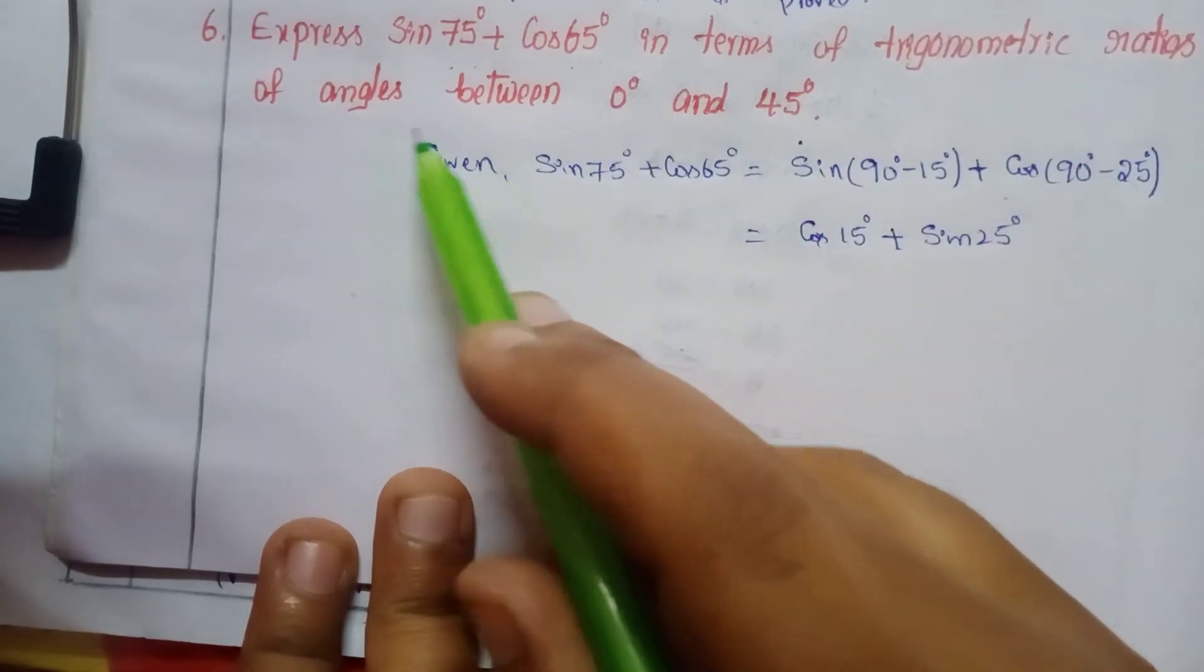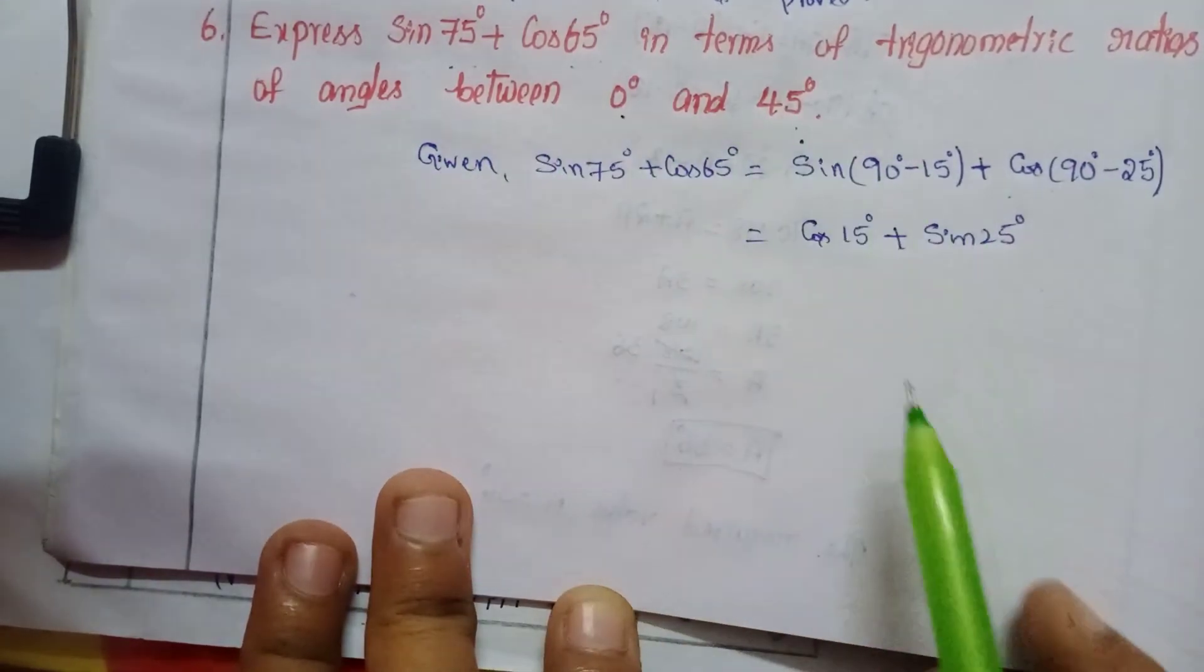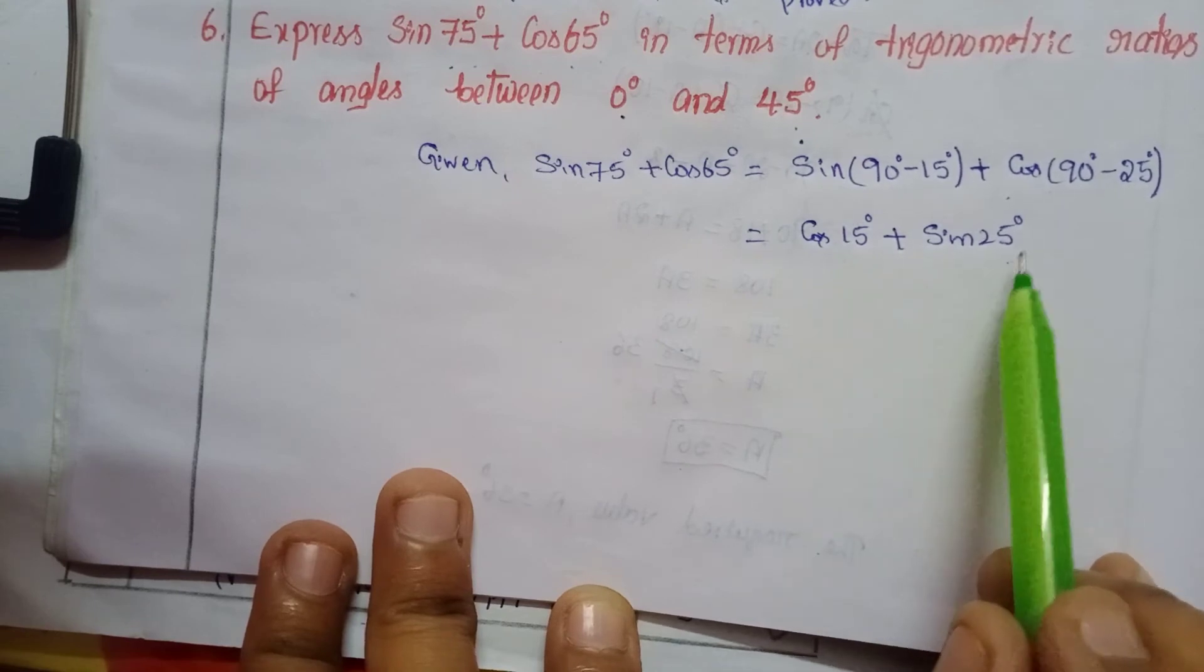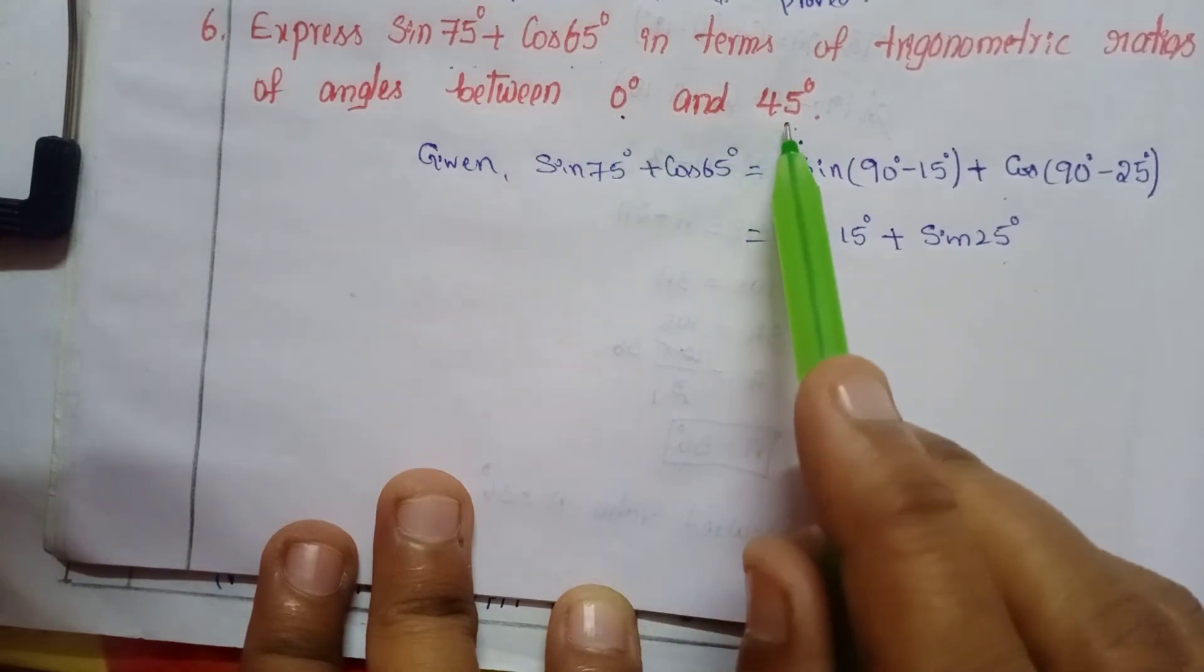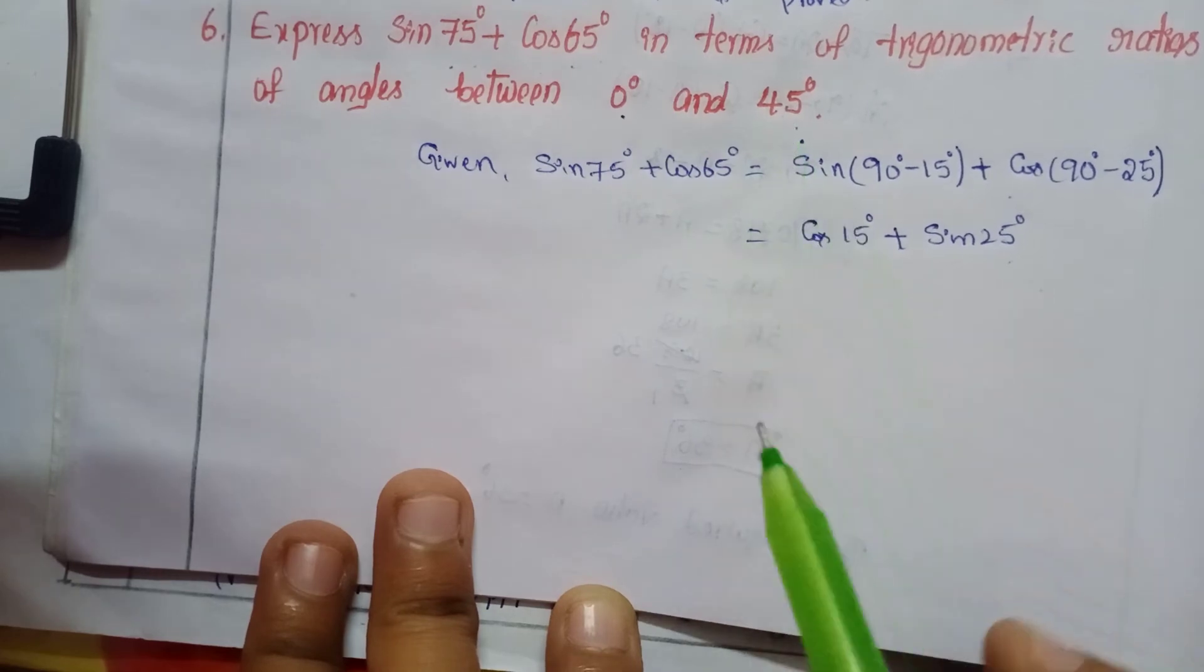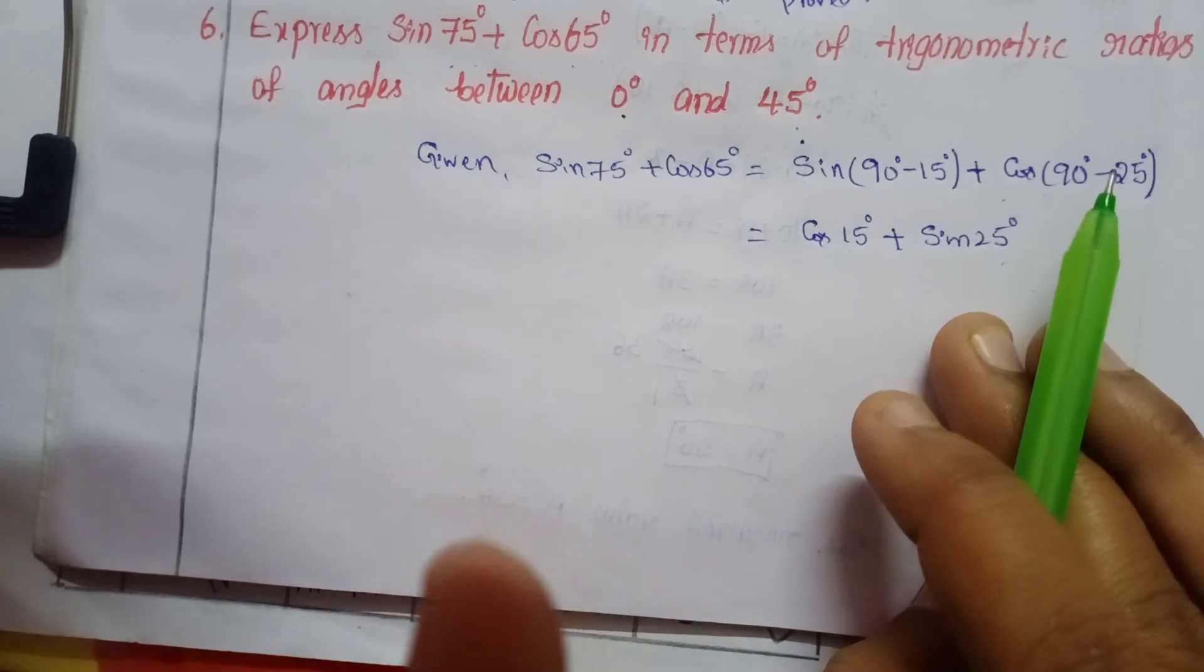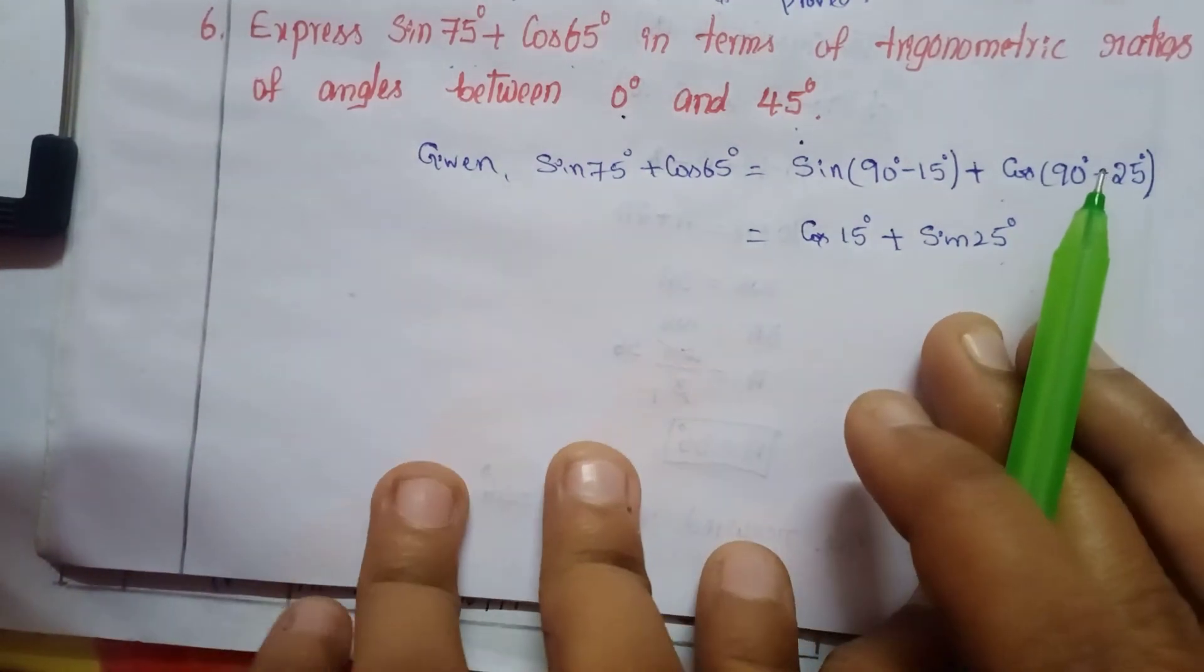These are trigonometric ratios of angles between 0° and 45°, as both 15° and 25° fall in this range. This is the required solution. Next class we will discuss the introduction before Exercise 11.4 problems.